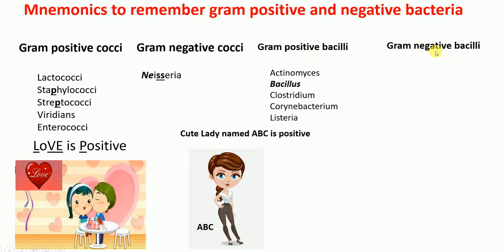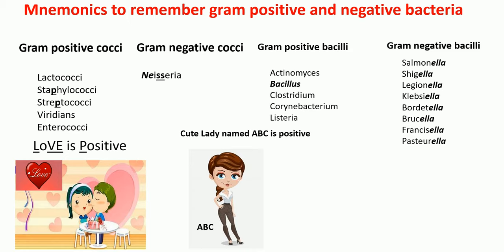Let's move on to gram-negative bacilli. In this list, all the gram-negative bacilli have names that end with 'ELLA.' For example: Salmonella — ELLA, Shigella — ELLA, Legionella — ELLA, Klebsiella — ELLA, Bordetella — ELLA, Brucella — ELLA, Francisella — ELLA, and Pasteurella — ELLA. So any bacterium whose name ends with ELLA falls in the category of gram-negative bacilli.